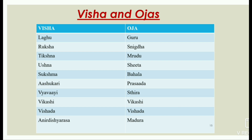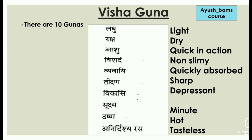Visha has all its gunas opposite to Ojas gunas, hence it vitiates Vatadi Doshas rapidly and causes immediate death. Visha and Ojas are completely opposite to each other. In Visha we have Laghu, whereas in Ojas we have Guru. In Visha we have Rukhsha, whereas in Ojas we have Snigdha. In Visha we have Tikshna, whereas in Ojas we have Mrudhu. Ushna in Visha and Shita in Ojas; Sukshma in Visha and Bahala in Ojas; Ashukari in Visha and Prasada in Ojas; Vyavai in Visha and Thira in Ojas.